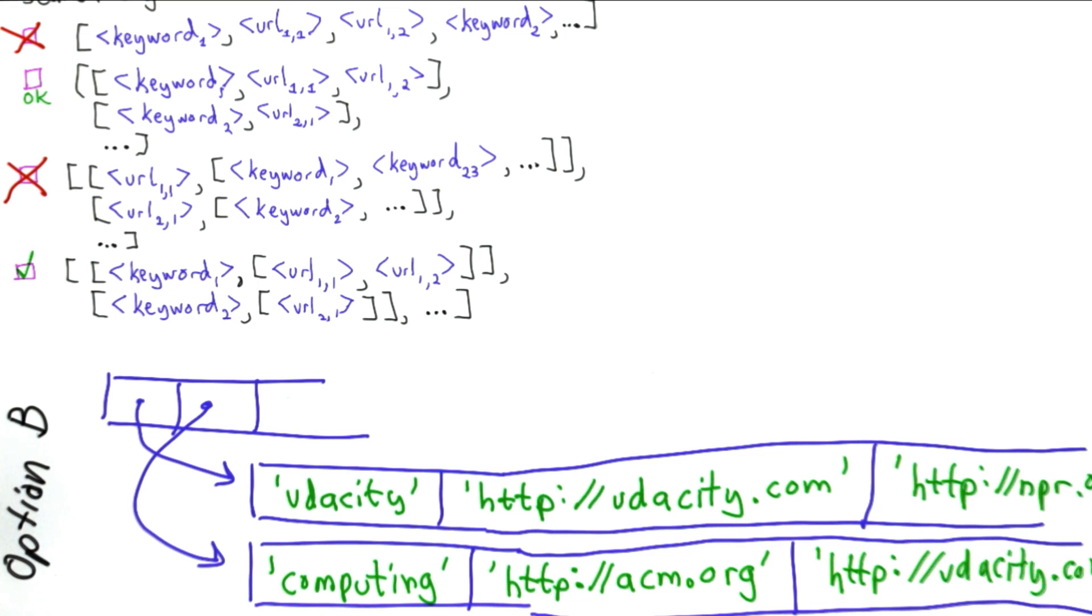So this is option B. We have a list where each element of the list is a list, and the element lists are themselves lists which contain the keyword, followed by URLs where that keyword appears.